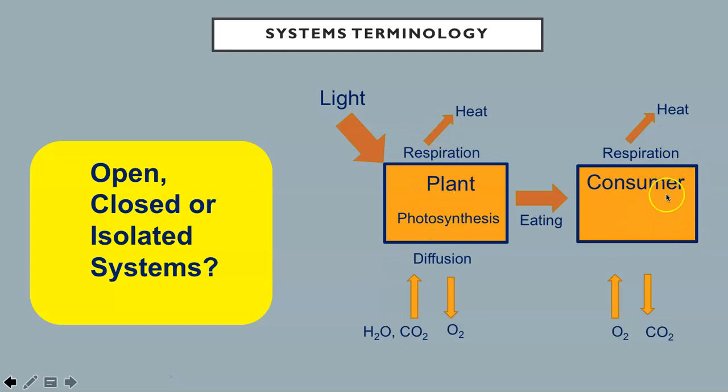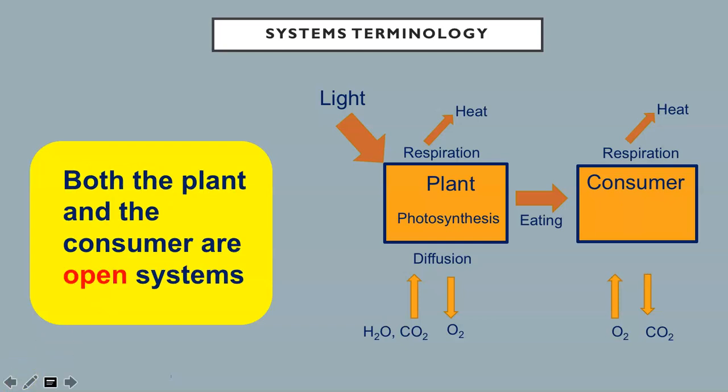Are the systems of the plant and the consumer open, closed, or isolated systems? Both the plant and the consumer are open systems because both matter and energy are being exchanged. Matter of carbon dioxide and water are going into the plant while oxygen is leaving the plant. Energy is also being exchanged with light coming in and heat going out. The consumer has chemical energy in the form of sugar going in and heat going out. Matter of oxygen goes in while carbon dioxide goes out. Of course, these are not all the flows happening in plants and consumers. It's just a representation of some flows and transformations.